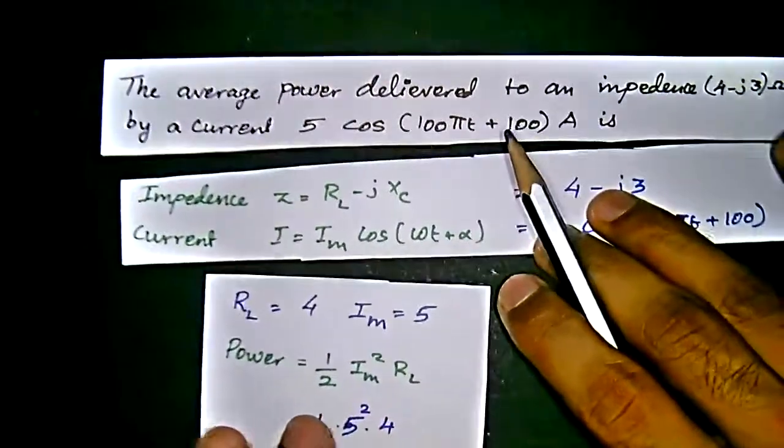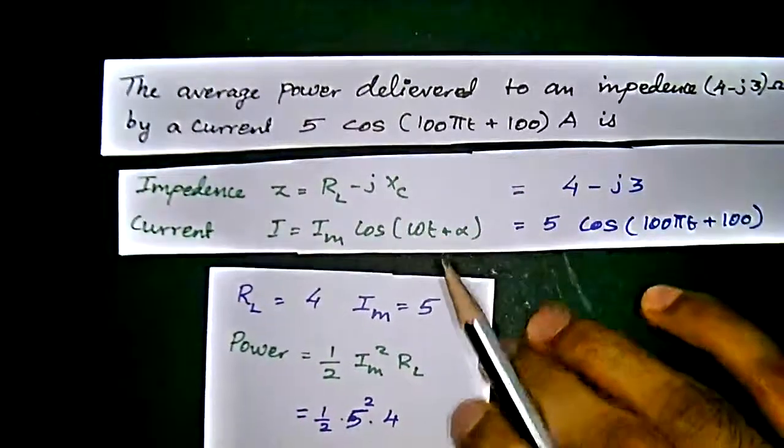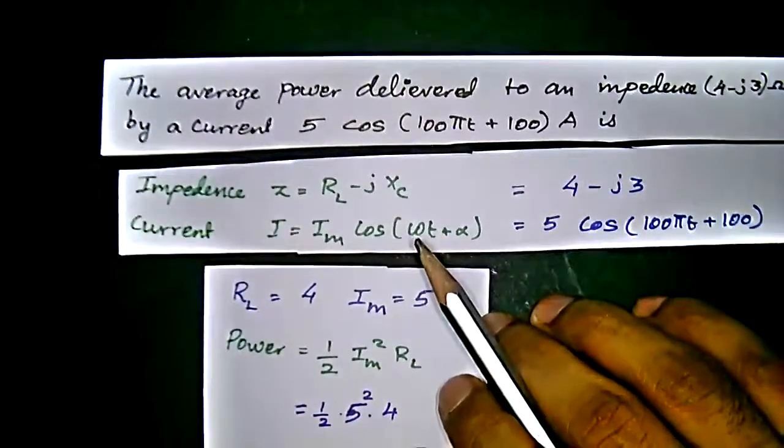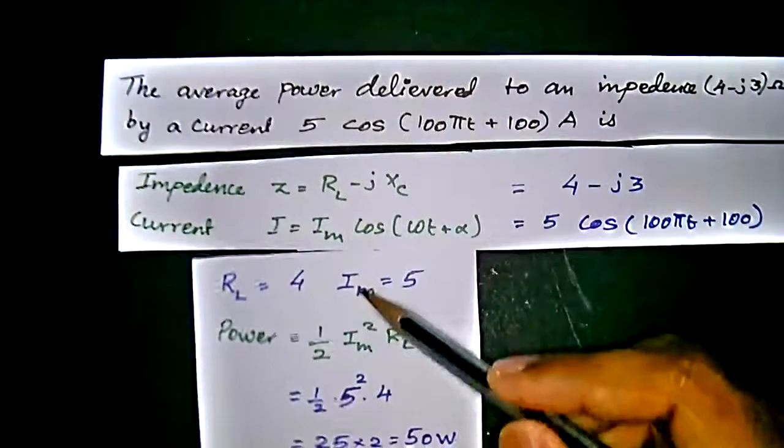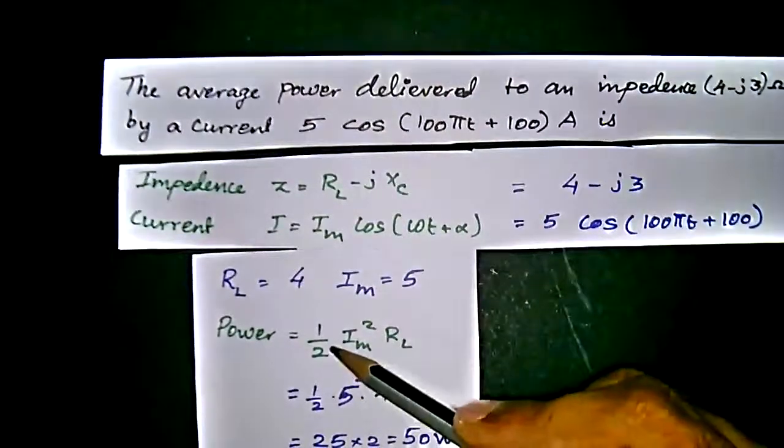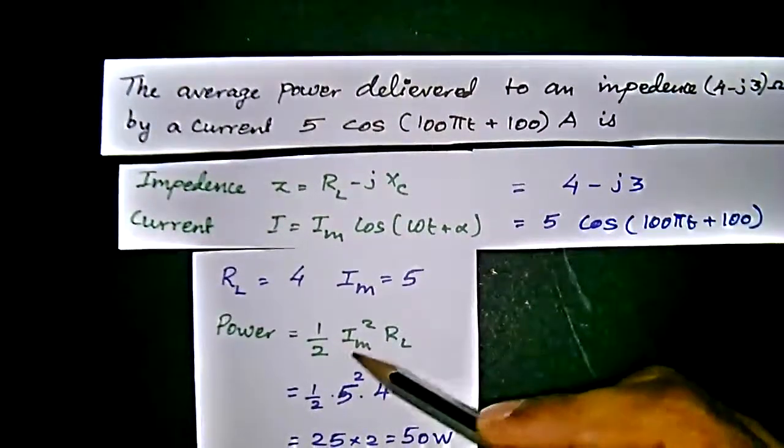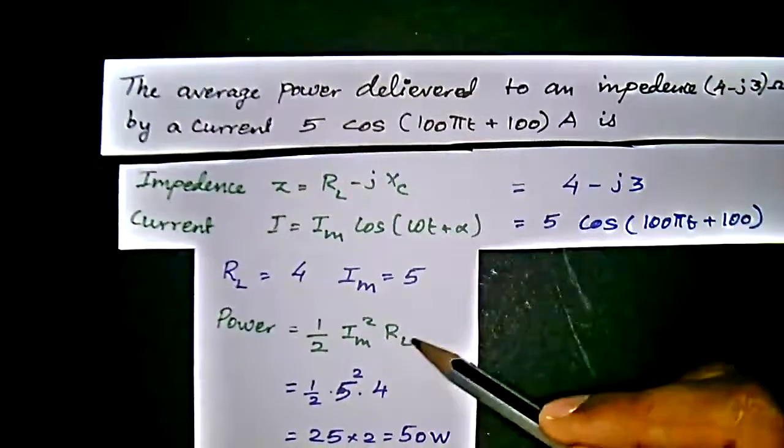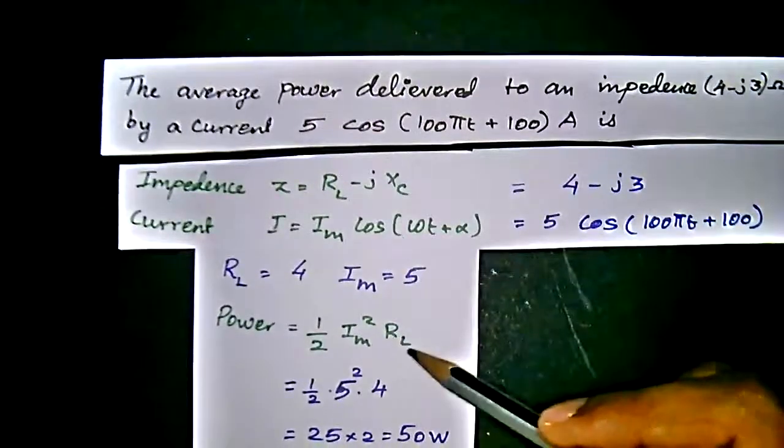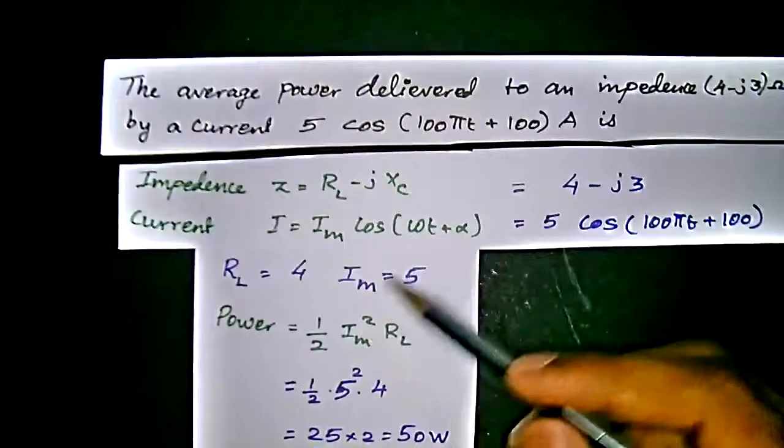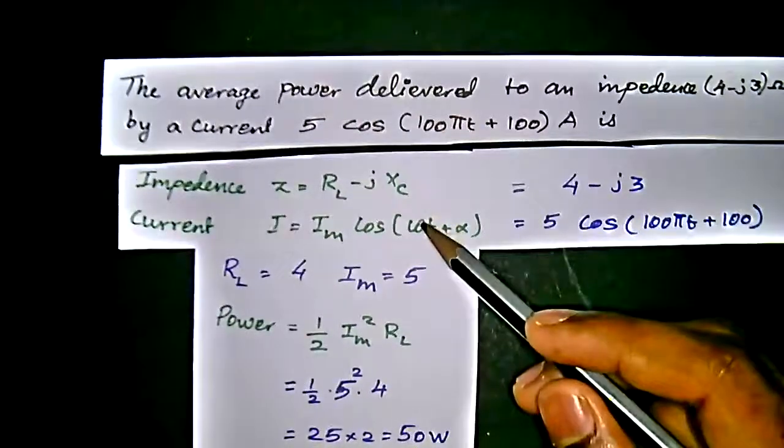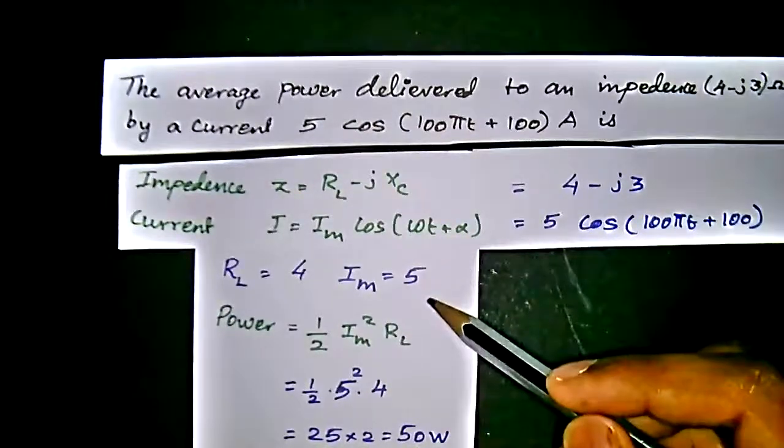We already know how to get the power equation using Ohm's law. So RL equal to 4, IM equal to 5, power equation is half IM square into RL. That is, IM square equal to, we already know from this equation as 5, and RL equal to 4.